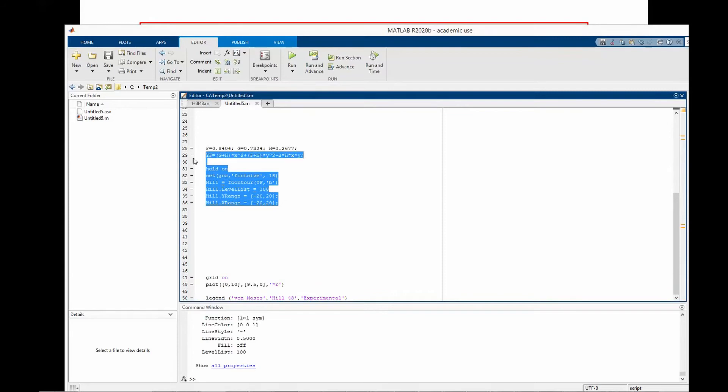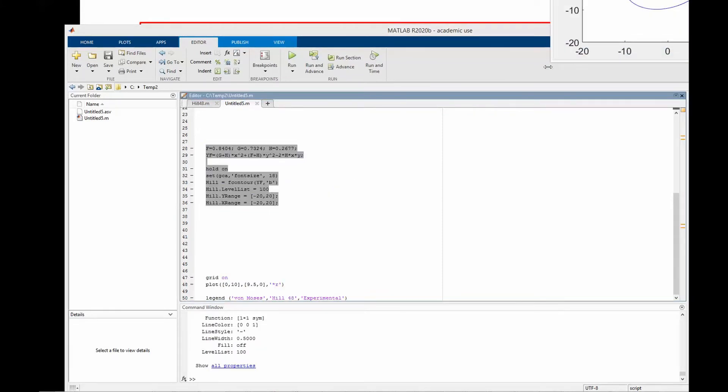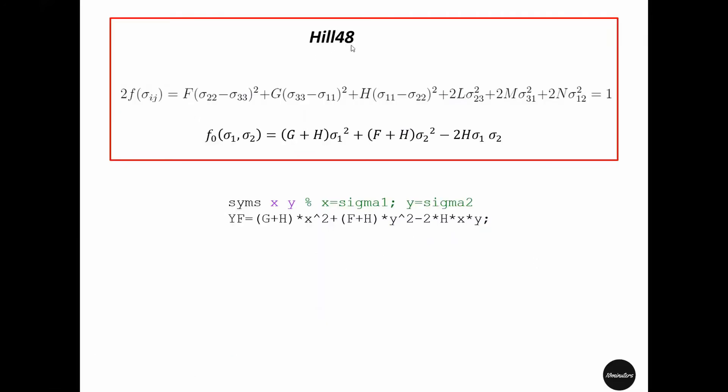Let's run the code and see the plot. This is how the yield surface looks when it is plotted in two-dimensional principal stress plane.